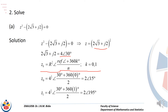Now for k equal to 1: z₁ has r equal to 4 to the power of 1/2, and the angle is (30 + 360 × 1) divided by 2. Simplifying, we get 2 cis 195 degrees. Remember: first write the general formula, specify the values of k from 0 to n minus 1 — with n equal to 2, that means k equal to 0 and k equal to 1 — then substitute to get the roots.